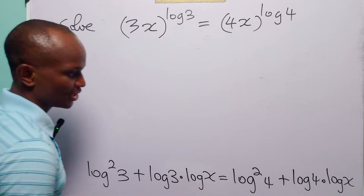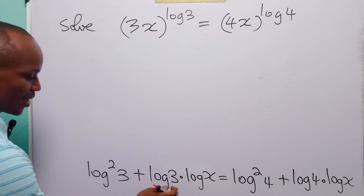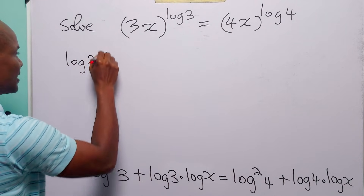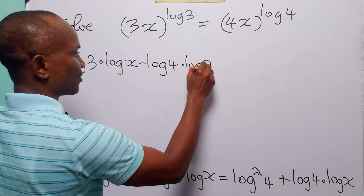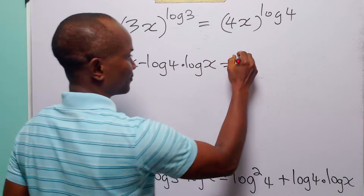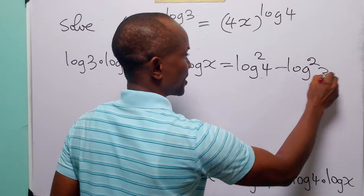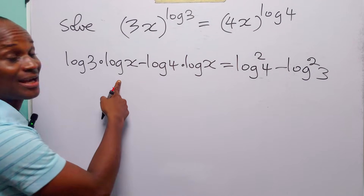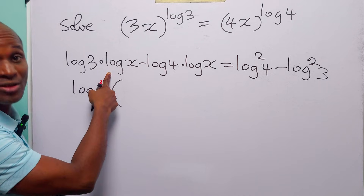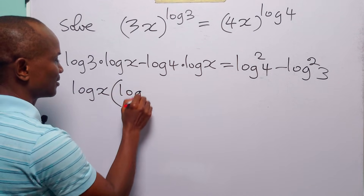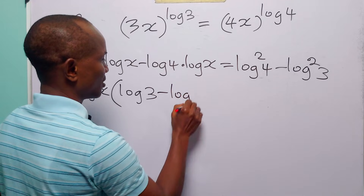Let us collect like terms. We bring the terms with the unknown over to the left-hand side and the constant terms to the right-hand side. We have log 3 times log x minus log 4 times log x, equal to log squared 4 minus log squared 3. There is a common factor of log x, so we factorize: log x times (log 3 minus log 4) equals log squared 4 minus log squared 3.